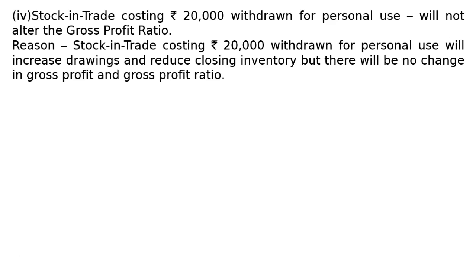Fourth: Stock-in-trade costing rupees 20,000 withdrawn for personal use will not alter the gross profit ratio. Reason: It will increase drawings and reduce closing inventory, and also reduce purchases. Hence, reduction in purchases and closing stock will nullify the effect on gross profit, and it will not have any effect on gross profit ratio.